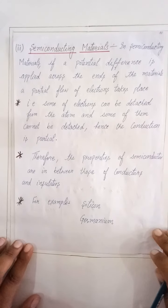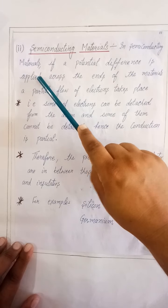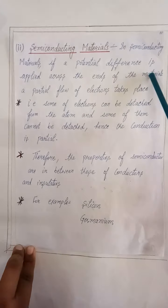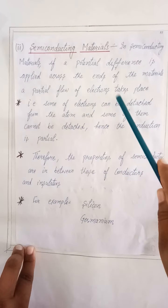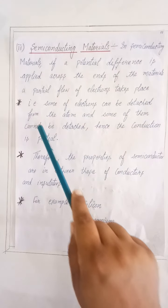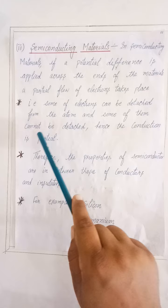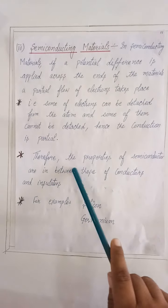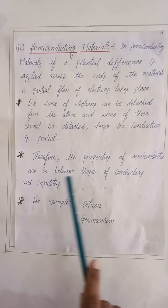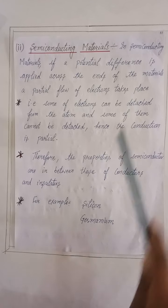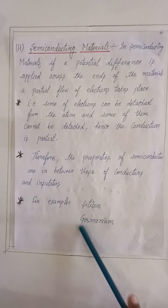Second are the semiconducting materials. In semiconducting materials, if a potential difference is applied across the ends of the material, a partial flow of electrons takes place — some of the electrons can be detached from the atom and some cannot. Hence, the conduction is partial. Therefore, the properties of semiconductors are in between those of conductors and insulators. Examples are silicon and germanium.